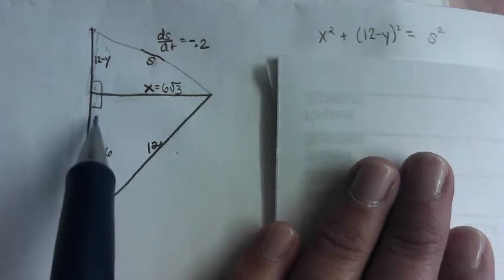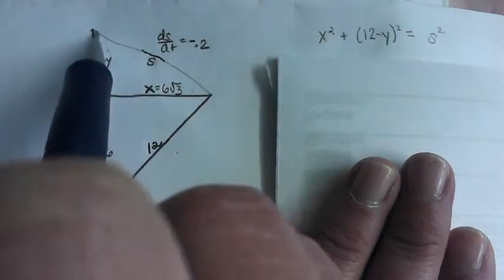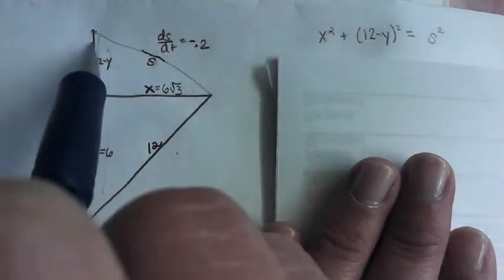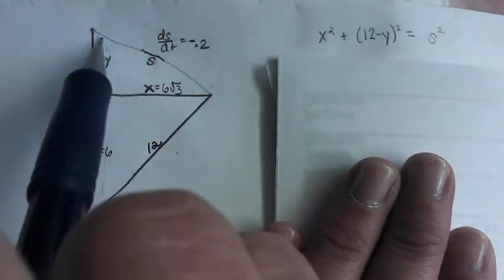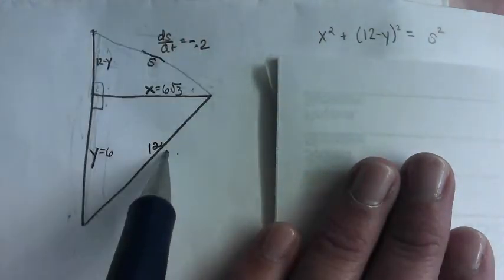So again, at the moment this is 6. This 12 minus 6 is also 6. And so 6, 6 root 3. This is also 12 at the moment. Although this 12 is changing, that 12 is not.